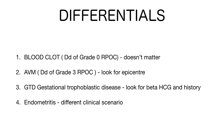The fourth differential is endometritis. On ultrasound, it shows thickened, heteroechoic endometrium with increased vascularity — hence it can mimic RPOC — but it will have a different clinical scenario, so it can be easily ruled out.